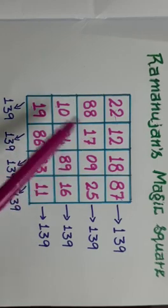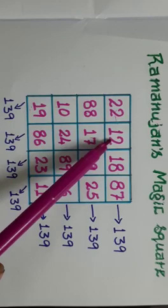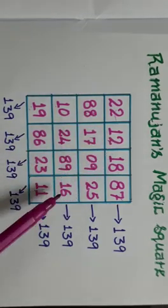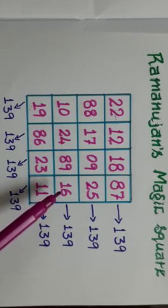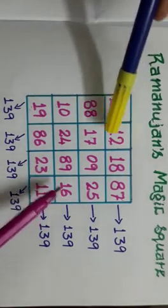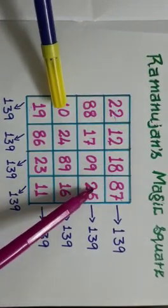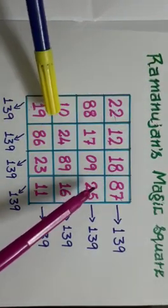And when we add 88 plus 12, it is 100 and 23 plus 16, it is 39. So these two, these two also, you will be getting 139. These two, these two also, you will be getting 139.